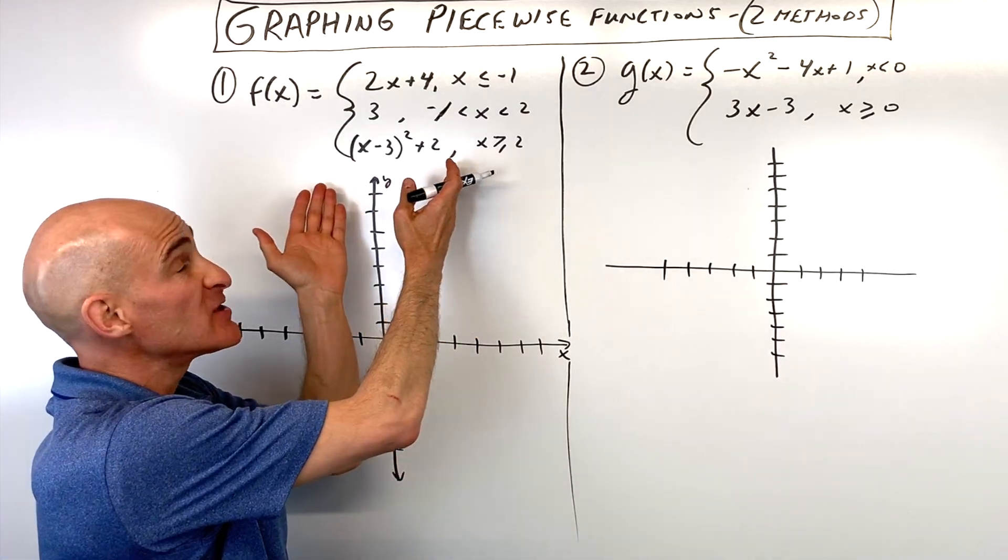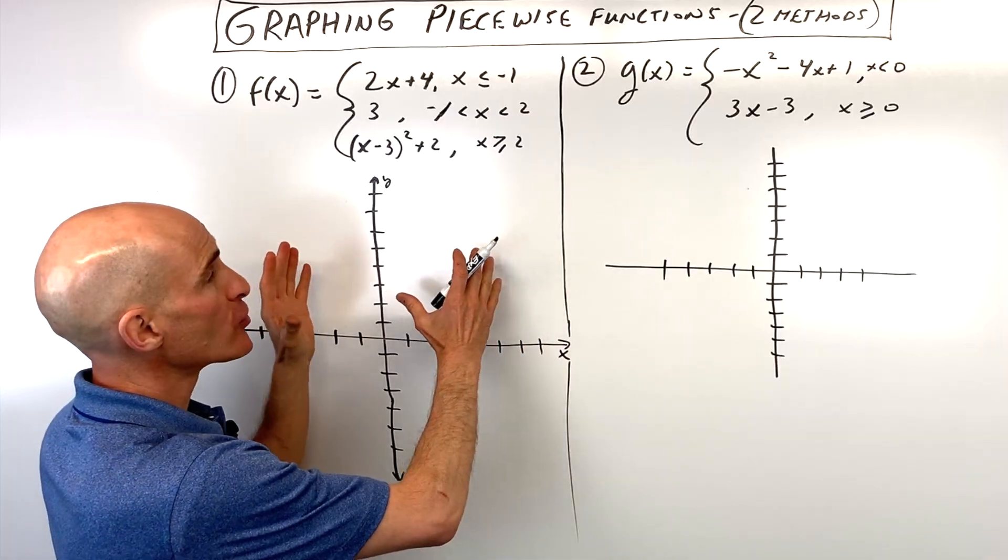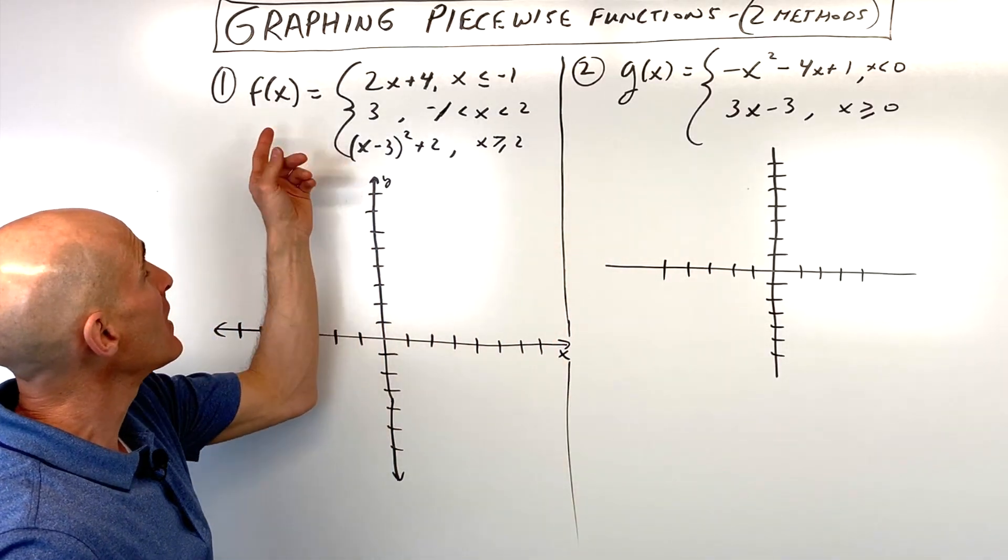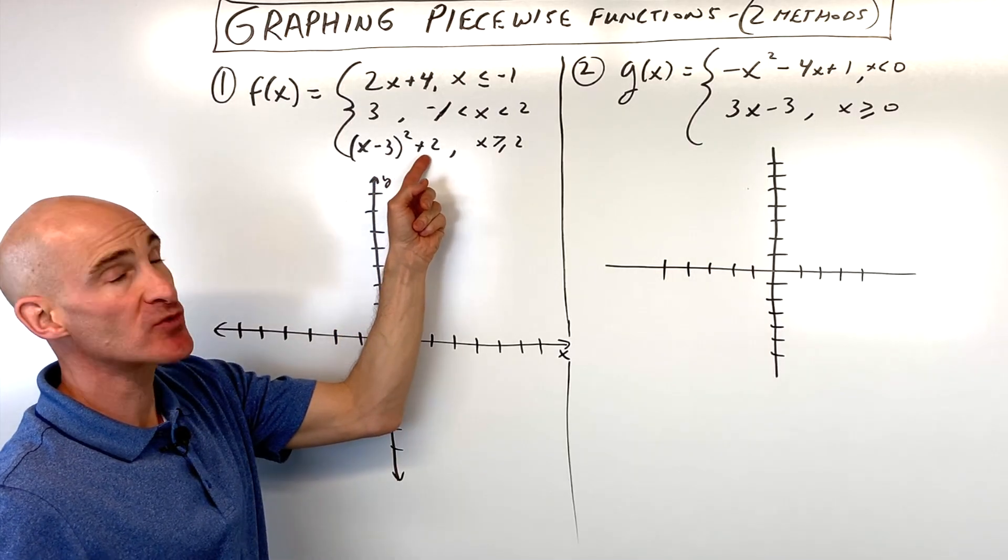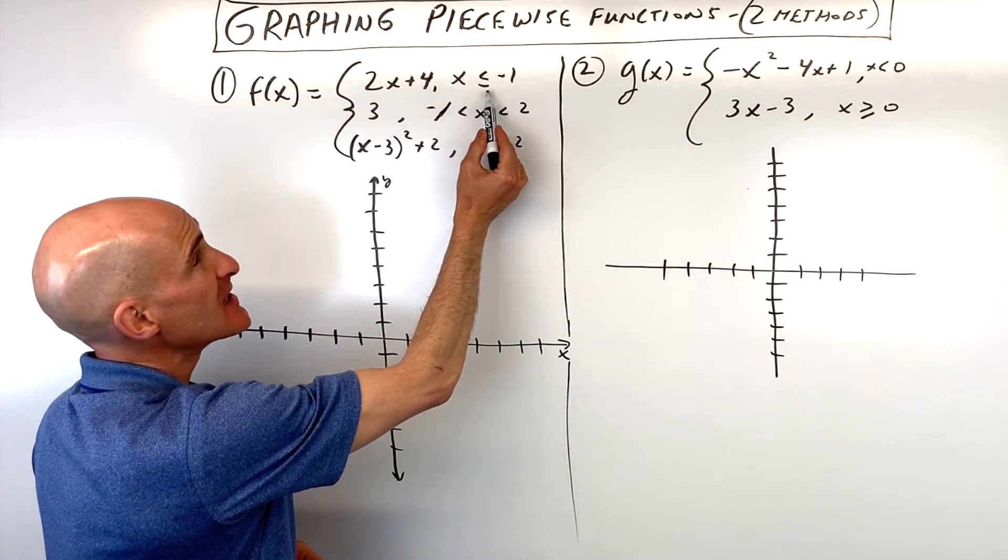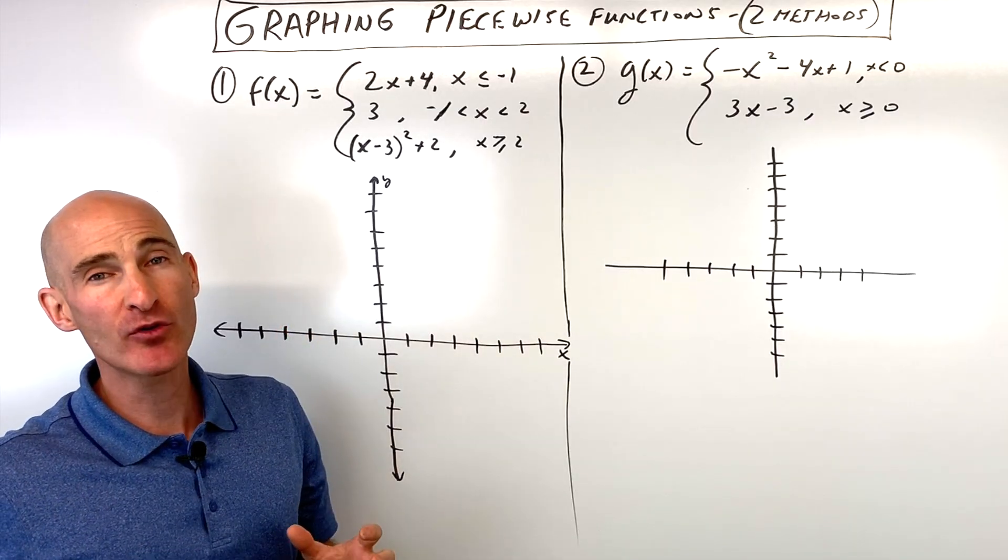Okay, how do we graph piecewise functions? There's two methods I'm going to show you in this video. We're going to go through two examples. The first one, you can see f of x equals 2x plus 4, 3, and x minus 3 squared plus 2, but it's giving us these domain restrictions, meaning we're just going to graph that portion of the graph.